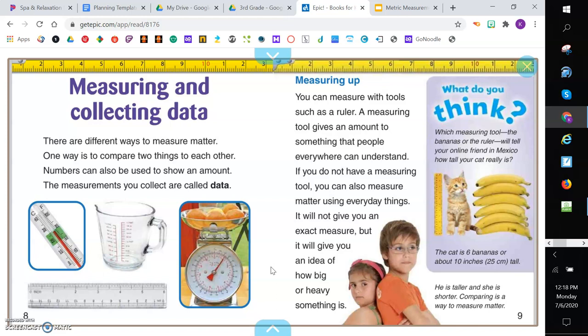Measuring up. You can measure with tools such as a ruler. A measuring tool gives an amount to something that people everywhere can understand. If you do not have a measuring tool, you can also measure matter using everyday things. It will not give you an exact measure, but it will give you an idea of how big or heavy something is.